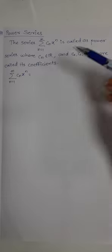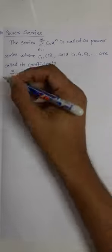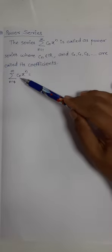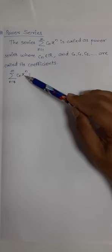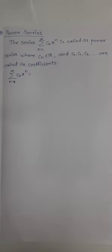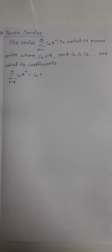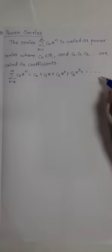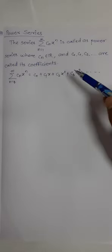To expand this series, put n equal to zero: you get c₀ x⁰, which is one, so you have c₀. If you put n equal to one, you get c₁x. If n equals two, you get c₂x². Similarly c₃x³, and so on. This is called a power series because x has some power.